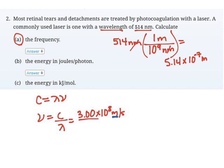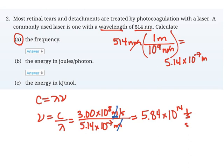That's what I'm going to plug into my equation: 5.14 times 10 to the negative 7 meters. Meters cancel out, and I'm left with the unit 1 over seconds, which is frequency. If I solve this, I get 5.84 times 10 to the 14th seconds to the minus 1 or hertz. That's my answer for A.